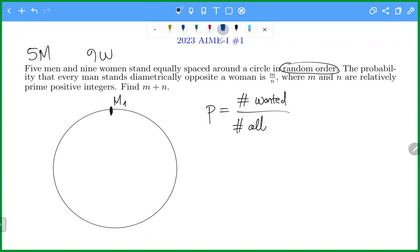The number of all cases is 13 factorial since the remaining 13 people can be arranged in 13 factorial ways. So let's calculate the number of wanted cases.